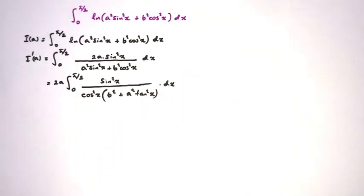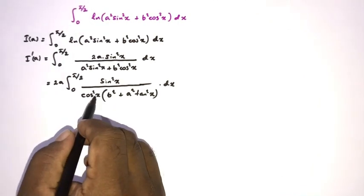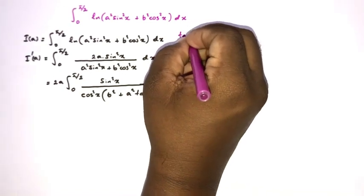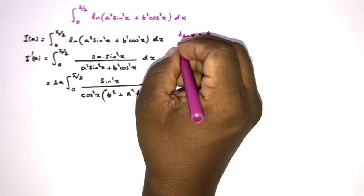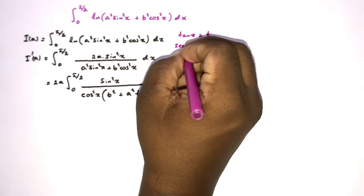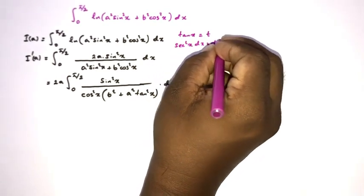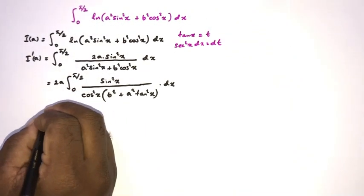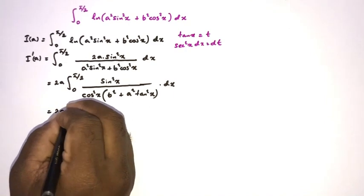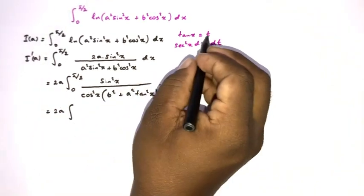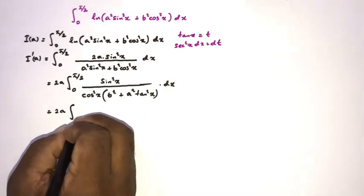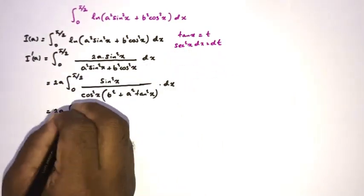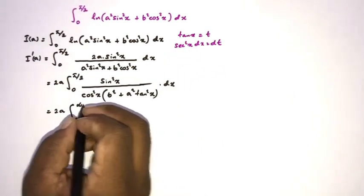Now I apply the substitution t = tan(x). Differentiating gives sec²x dx = dt. We also change the limits: when x → 0, t → tan(0) = 0; when x → π/2, t → tan(π/2) = ∞. So the limits become 0 to ∞, and we have 2a times the integral from 0 to ∞.